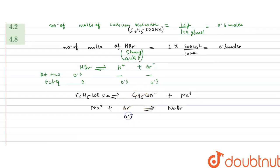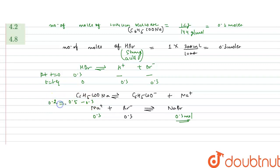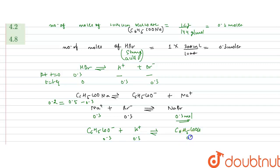Br⁻ is 0.3 moles; initially 0.5 moles of sodium benzoate were present, so 0.3 moles of sodium will react with Br⁻ to form 0.3 moles of NaBr. That leaves 0.5 − 0.3 = 0.2 moles of sodium benzoate remaining. Similarly, C6H5COO⁻ reacts with H⁺ to form benzoic acid, producing 0.3 moles of benzoic acid.